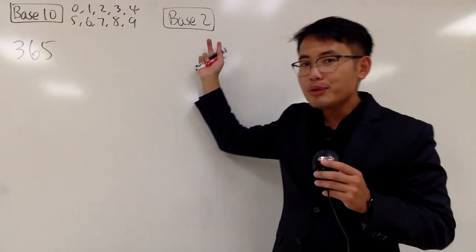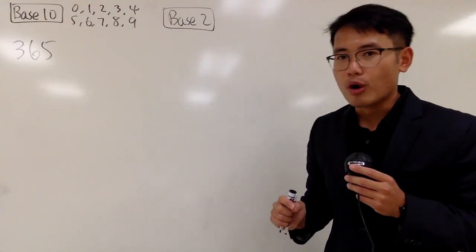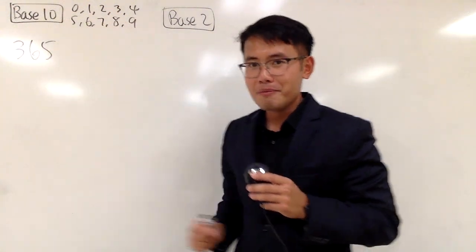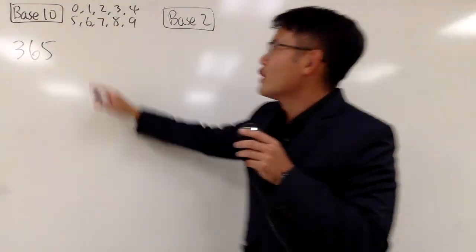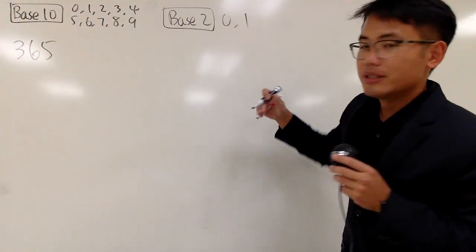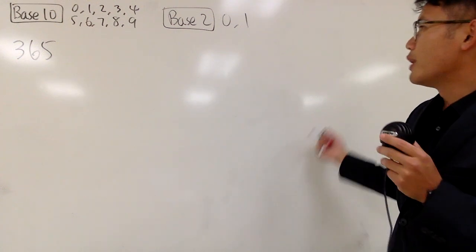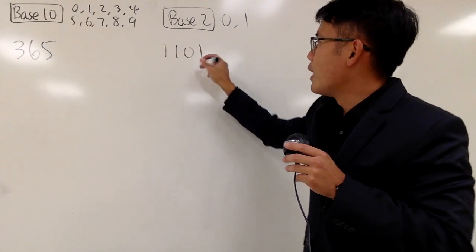First of all, we can only use 2 digits to write our numbers in the base 2 world. Which 2 digits? Am I going to pick 2 and 9? No, right? We'll do this in a more logical way. So of course, let's just put 0 and 1. These are the 2 digits that we can use in the base 2 world to write our number. Let me just write a number for you guys. Maybe let's say 1, 1, 0, 1, like this.